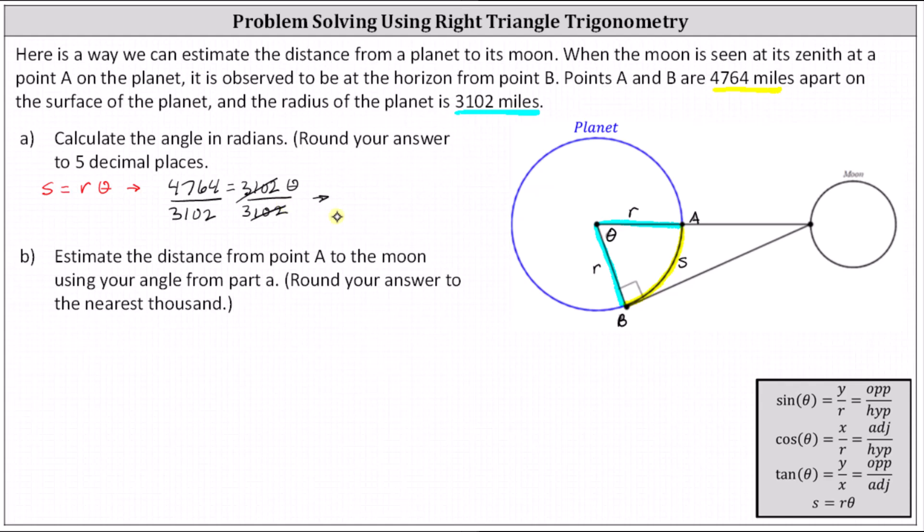Simplifying and rounding to five decimal places, theta is approximately 1.53578, which we determine by dividing 4,764 by 3,102.